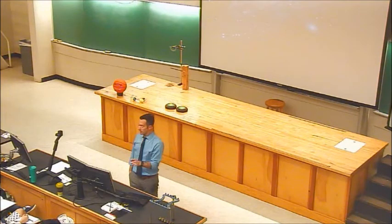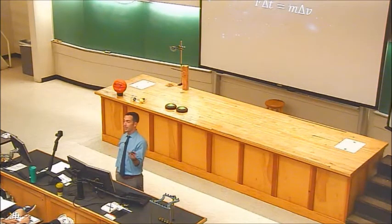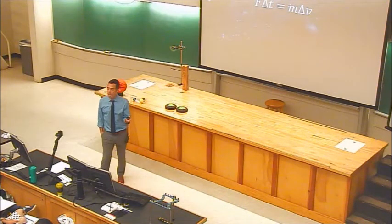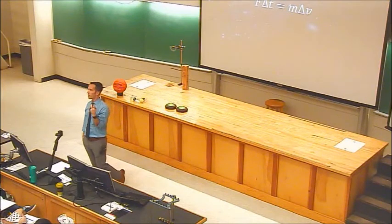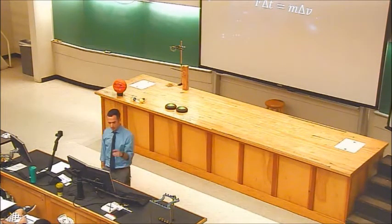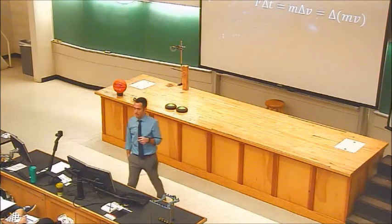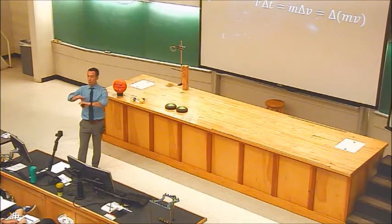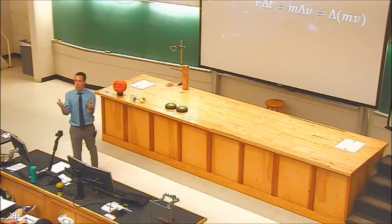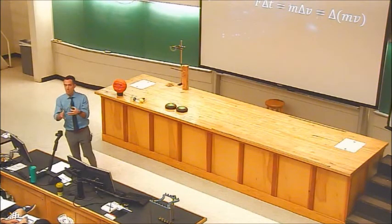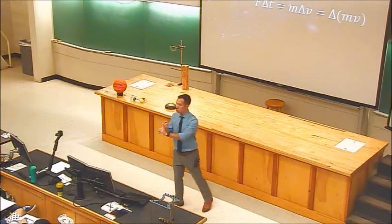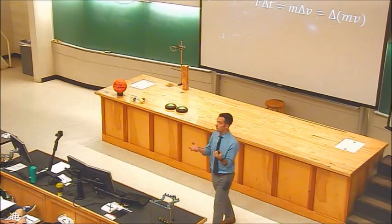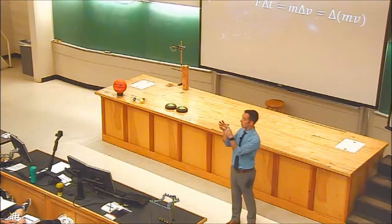If we multiply both sides of F = ma by time, we get that formula — F delta T = m delta V, sometimes called 'fat mav.' Right there, I'm already basically at this concept called momentum. We can arrive at two new calculated quantities: force times time, and mass times velocity. We haven't introduced any new physical quantities — I've just grouped them differently.